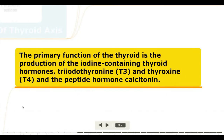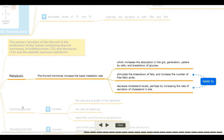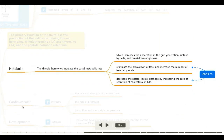Function: the primary function of the thyroid is the production of iodine-containing thyroid hormones T3 and T4, and the peptide hormone calcitonin. Metabolic effects: thyroid hormones increase the basal metabolic rate, increasing absorption in the gut, uptake by cells, and breakdown of glucose. They also stimulate the breakdown of fats and increase the number of free fatty acids, leading to decreased cholesterol levels.